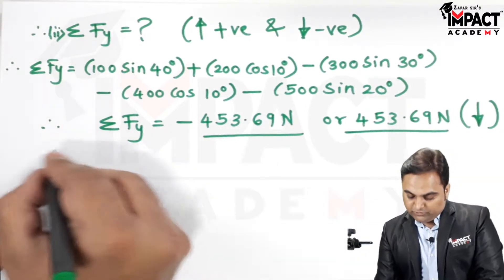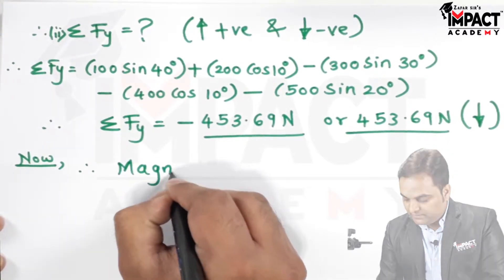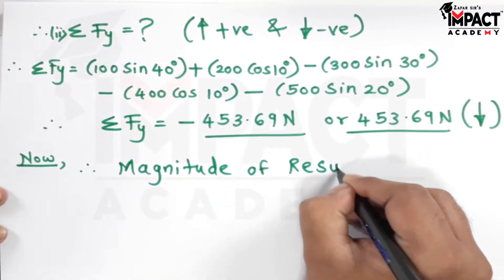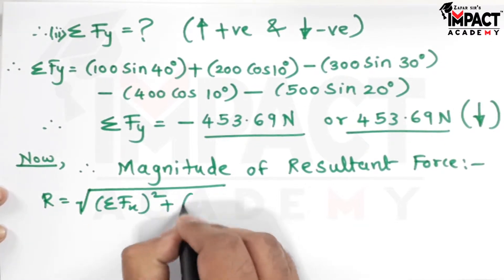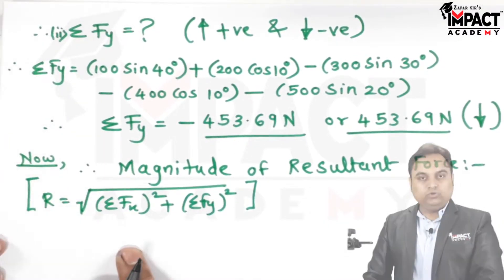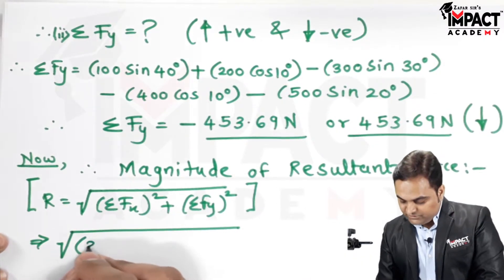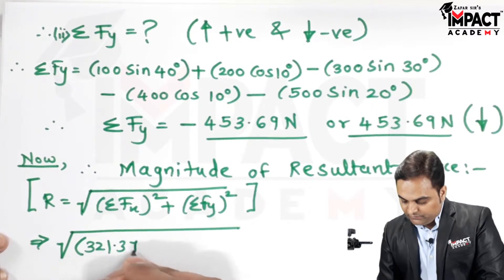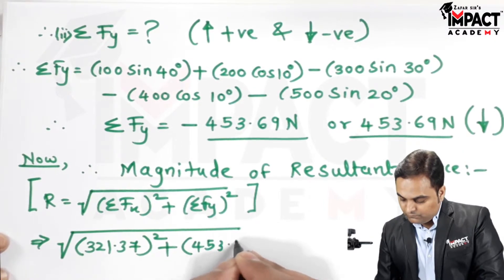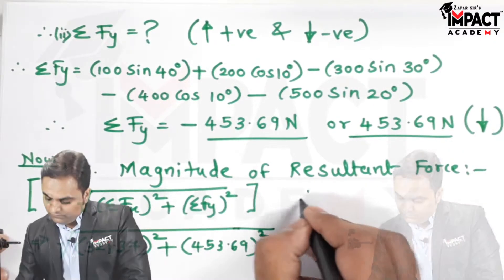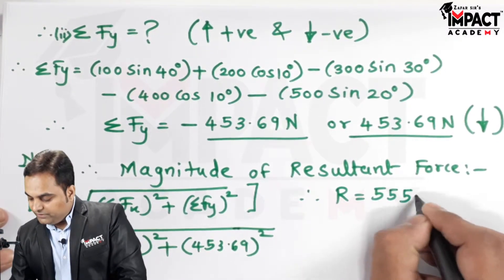Now I can calculate the resultant. The magnitude of the resultant force is given by R = √(ΣFx² + ΣFy²) = √(321.37² + 453.69²). Therefore, the magnitude of the resultant force comes out to be 555.98 N.